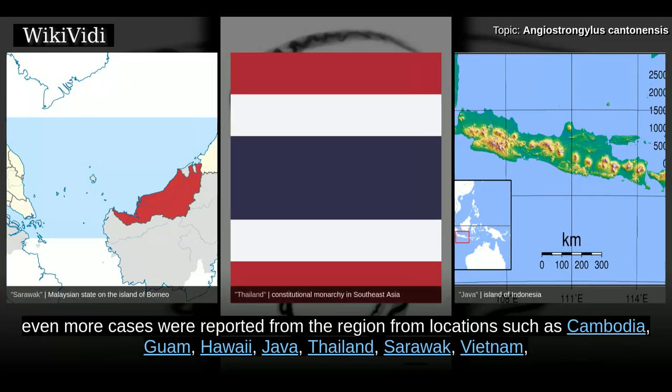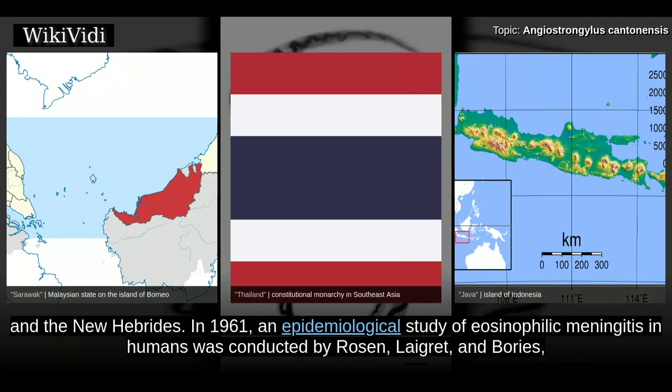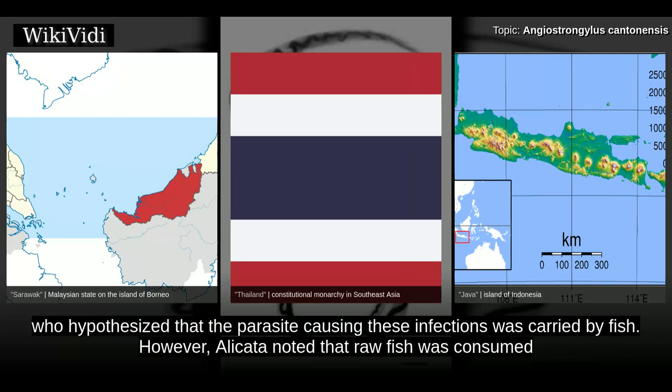In the 1960s, even more cases were reported from locations such as Cambodia, Guam, Hawaii, Java, Thailand, Sarawak, Vietnam, and the New Hebrides. In 1961, an epidemiological study of eosinophilic meningitis in humans was conducted by Rosen, Legret, and Bores, who hypothesized that the parasite causing these infections was carried by fish.